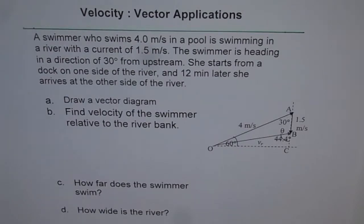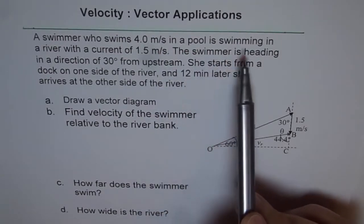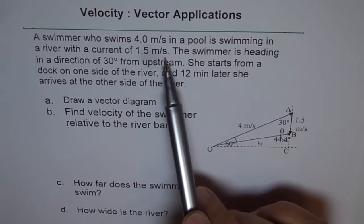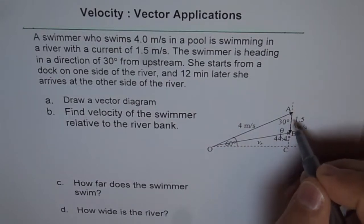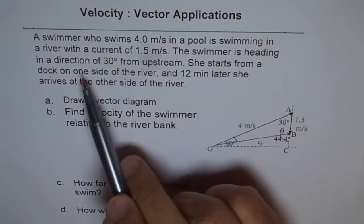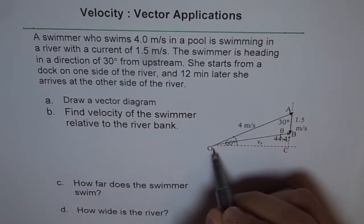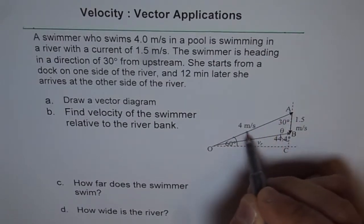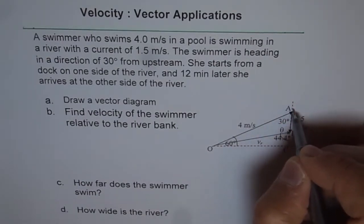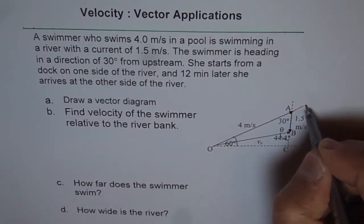This question is quite different from most of the questions we have done so far. The first part is to draw a vector diagram. We are given the velocity of the water which is downstream, and the velocity of the swimmer which is at an angle upstream. The swimmer is heading in a direction 30 degrees from upstream. O is the starting point, and the swimmer heads at a velocity of 4 meters per second. The water is flowing downwards at 1.5 meters per second, and the angle with the north that the swimmer makes is 30 degrees.